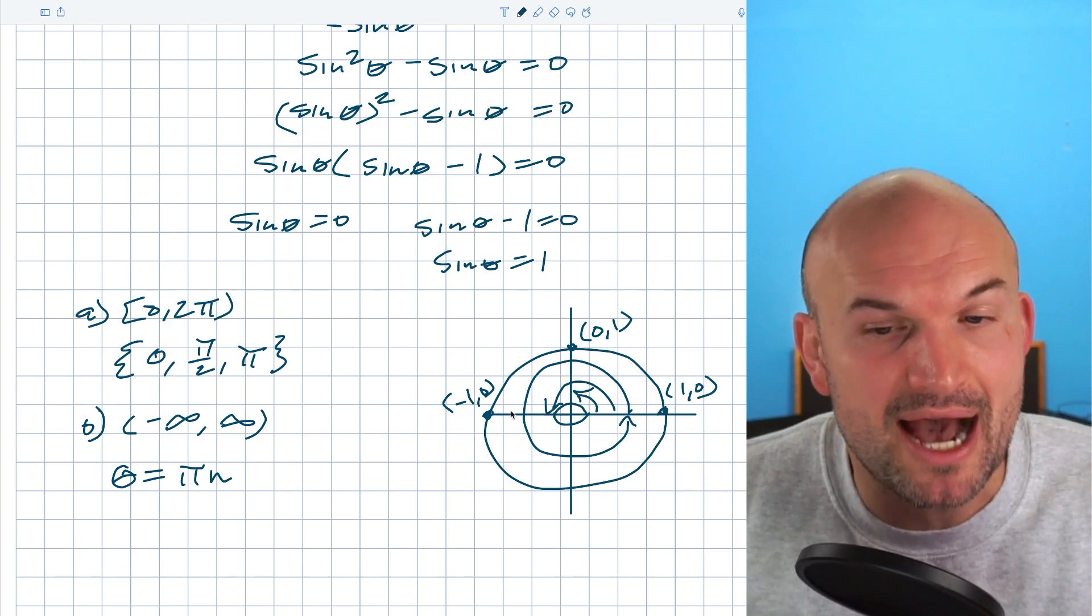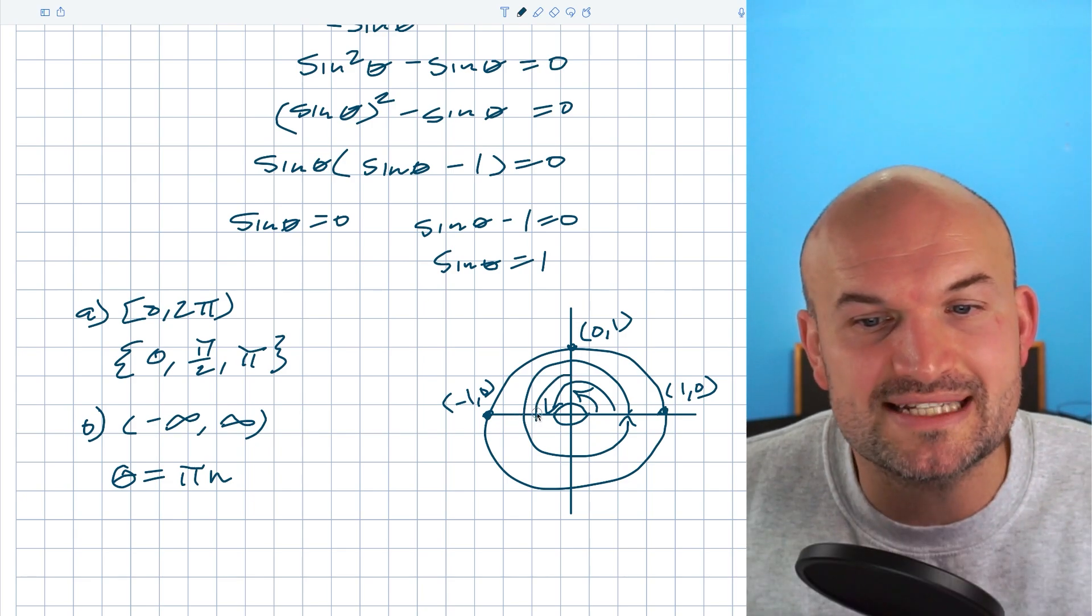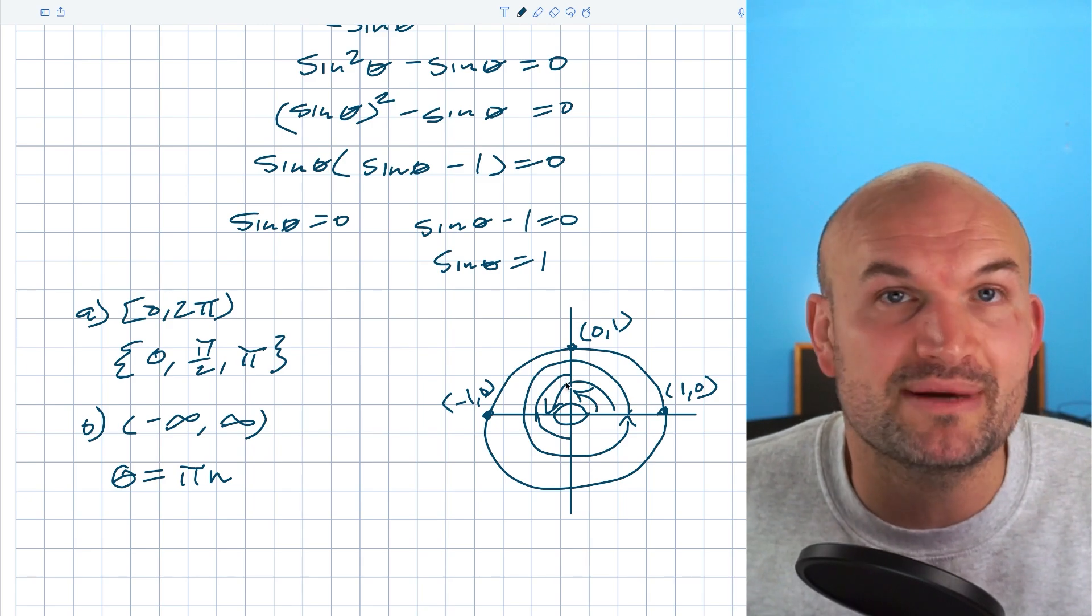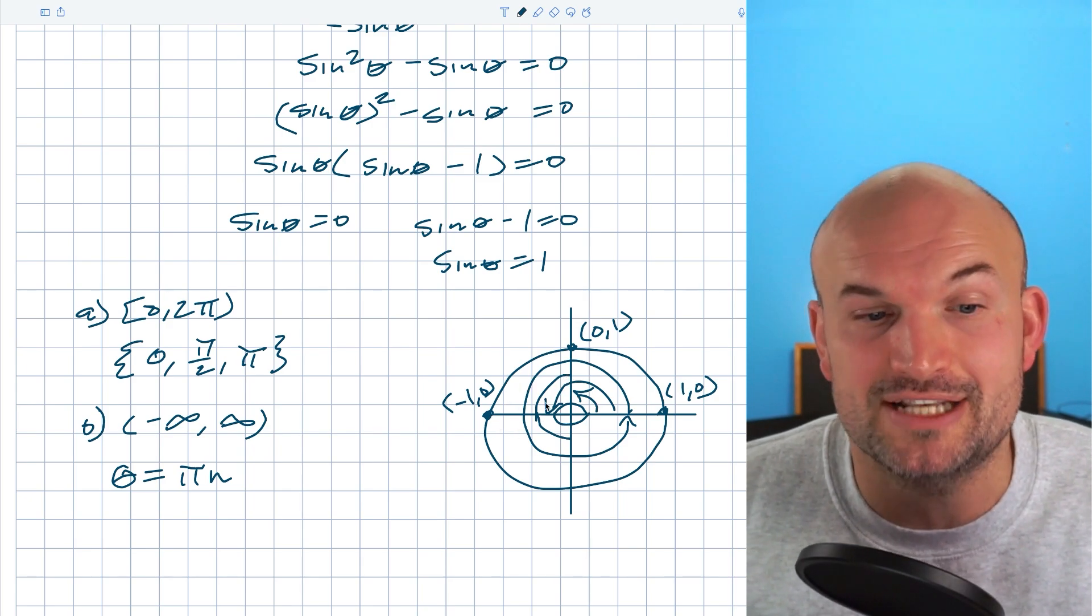Now for my second solution which is at pi halves, there's no interval that I can keep adding. I could add pi halves that would take me to pi, but if I added pi halves again that's going to take me to 3 pi over 2, which is not a solution. The only thing I can do for this solution is keep adding two pi n to it.